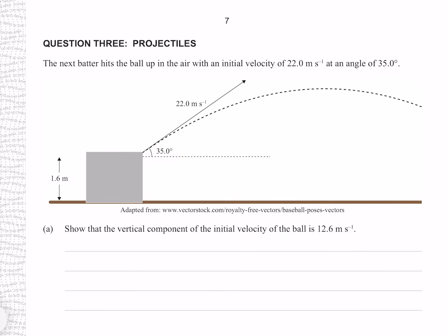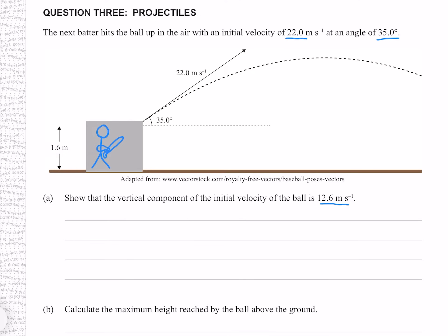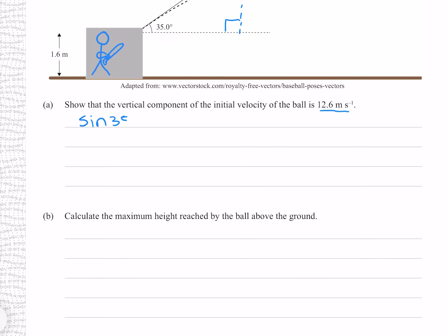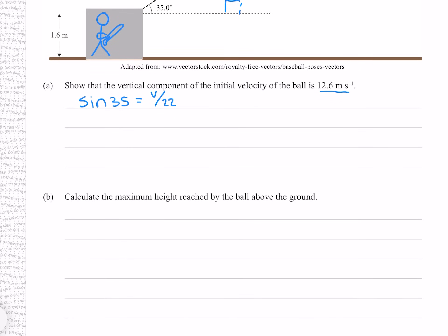Question 3. The next batter hits the ball with an initial velocity of 22.0 meters per second at an angle of 35 degrees. Show that the vertical component of the initial velocity is 12.6 meters per second. The 22 m/s forms the hypotenuse; the vertical component is opposite the angle, so we use sine: sin(35°) equals the vertical component divided by 22. Solving gives 12.6 meters per second. If you get anything else, check your calculator is in degrees.